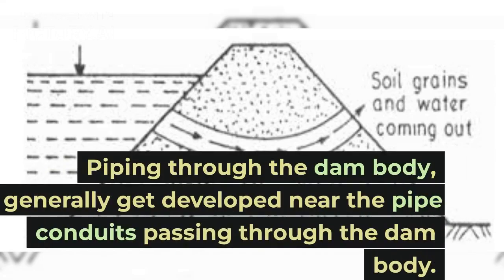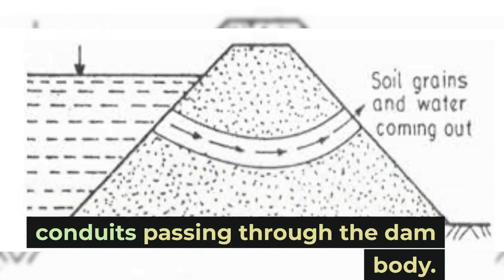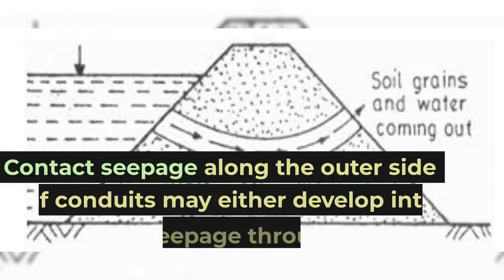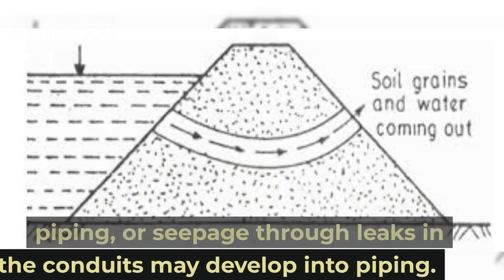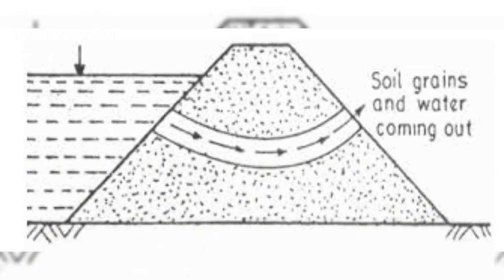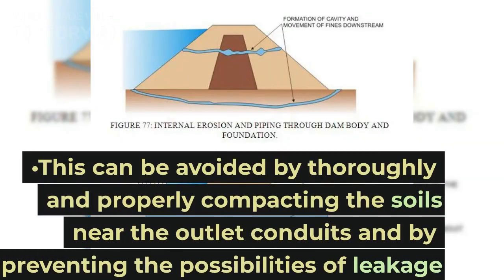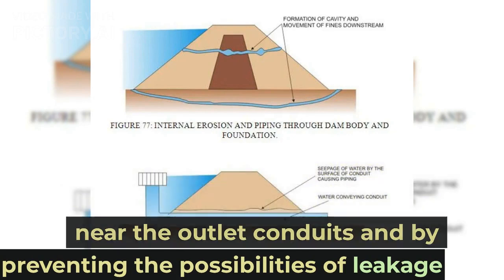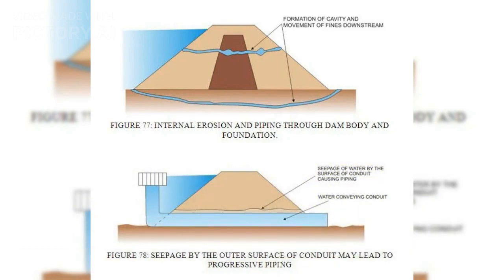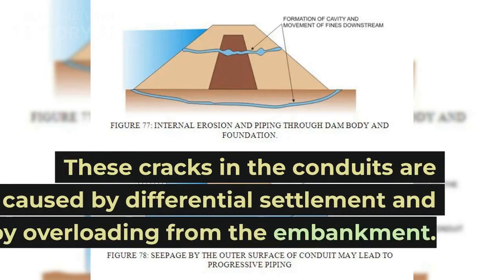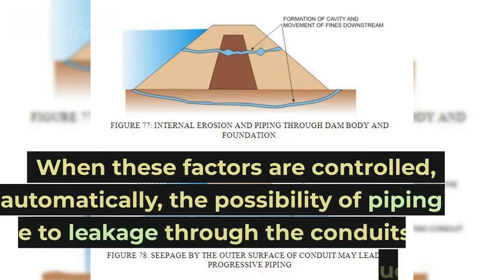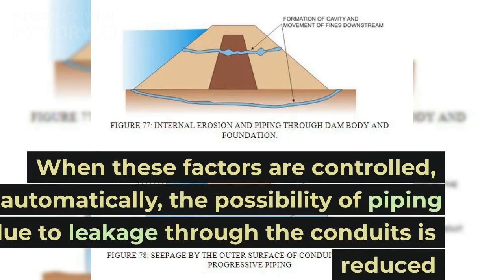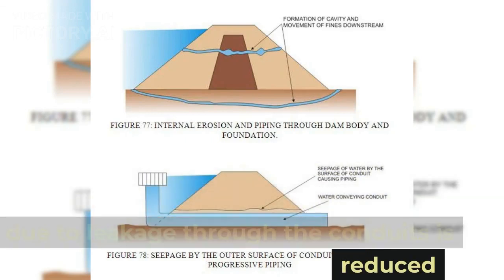Piping through the dam body generally develops near pipe conduits passing through the dam body. Contact seepage along the outer side of conduits may either develop into piping, or seepage through leaks in the conduits may develop into piping. This can be avoided by thoroughly and properly compacting the soils near the outlet conduits and by preventing the possibilities of leakage through conduits by preventing the formation of cracks. These cracks in the conduits are caused by differential settlement and by overloading from the embankment. When these factors are controlled, the possibility of piping due to leakage through conduits is reduced.